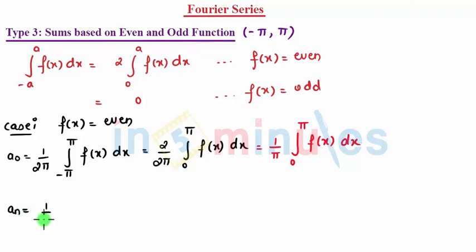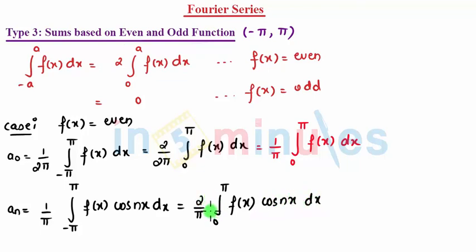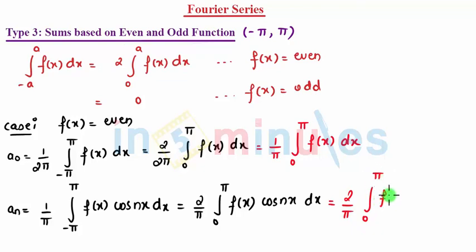In the same way, an is 1 upon pi times the integral from minus pi to pi of f(x) cos(nx) dx. Since f(x) is even and cos(nx) is also even, I can take 2 outside and write it as 2 by pi times the integral from 0 to pi of f(x) cos(nx) dx.